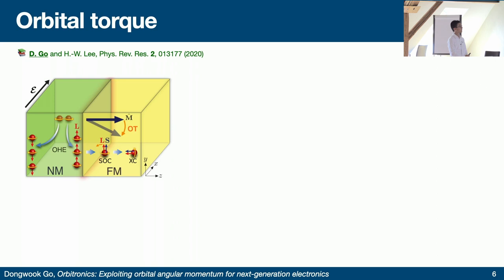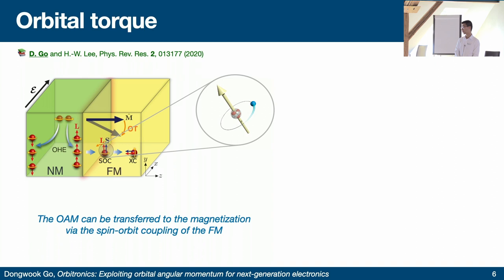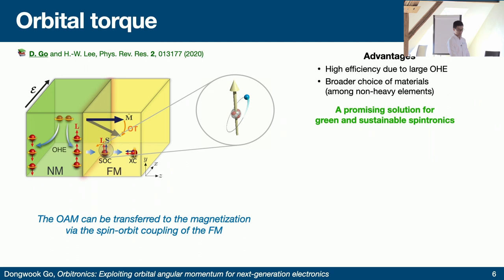Once I had done this work, I started to wonder: can we use this orbital current for spintronics applications? Because orbital current carries angular momentum just like spin current does. The idea was to find a microscopic mechanism to transfer orbital angular momentum to the magnetization. We found this is possible if there is spin-orbit coupling in the ferromagnet — a non-equilibrium orbital accumulation in the ferromagnet can result in tilting of the magnetization. This is called orbital torque, and it offers a new way to control magnetization, complementary to spin-transfer torque or spin-orbit torque.